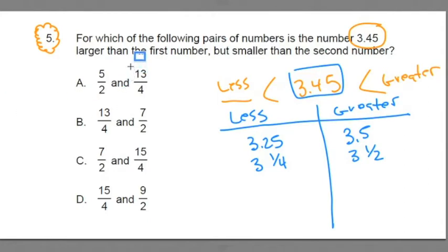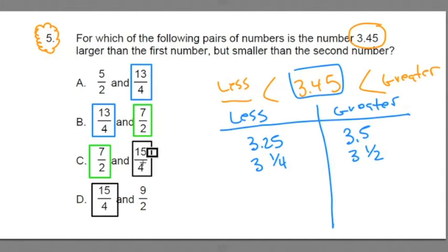Does everyone notice there are some fractions that repeat? Like the 13 fourths, those both repeat. The seven halves are repeating values. Or the 15 fourths. When you see something like this, it means you don't have to do eight calculations. You only have to do three. And those three should give you enough information to eliminate three of the choices and correctly identify the right scenario. This is how they write these exams. The teacher who's looking for patterns will only do three, and you'll save yourself a lot of time.